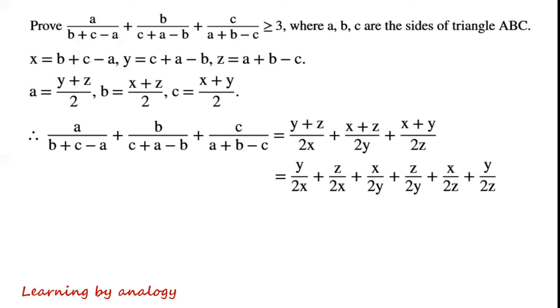We want to apply AM-GM. So we write the first term Y plus Z over 2X as two terms: Y over 2X and Z over 2X.